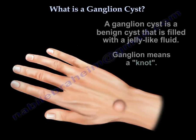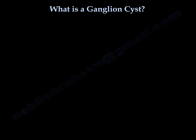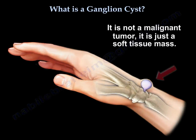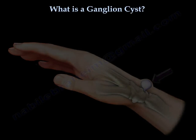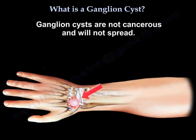A ganglion cyst is a benign cyst that is filled with a jelly-like fluid. 'Ganglion' means a knot. It is not a malignant tumor — it's just a soft tissue mass. It is not cancerous and it will not spread.